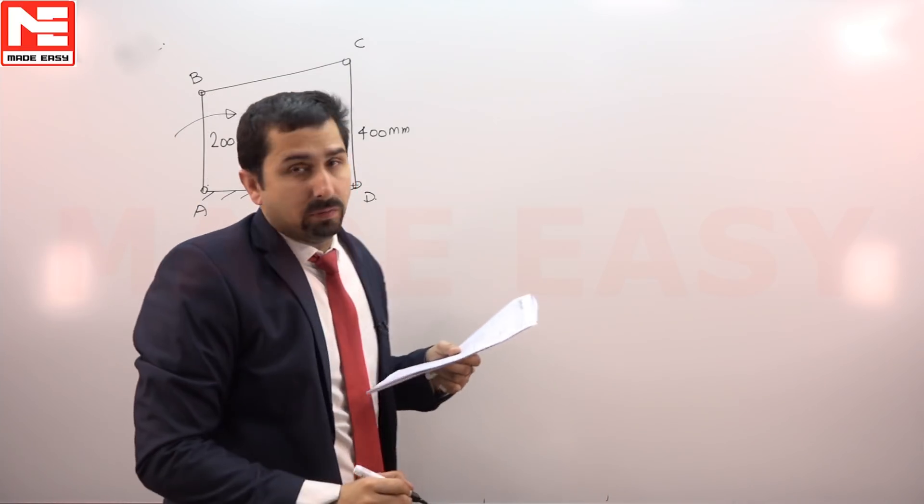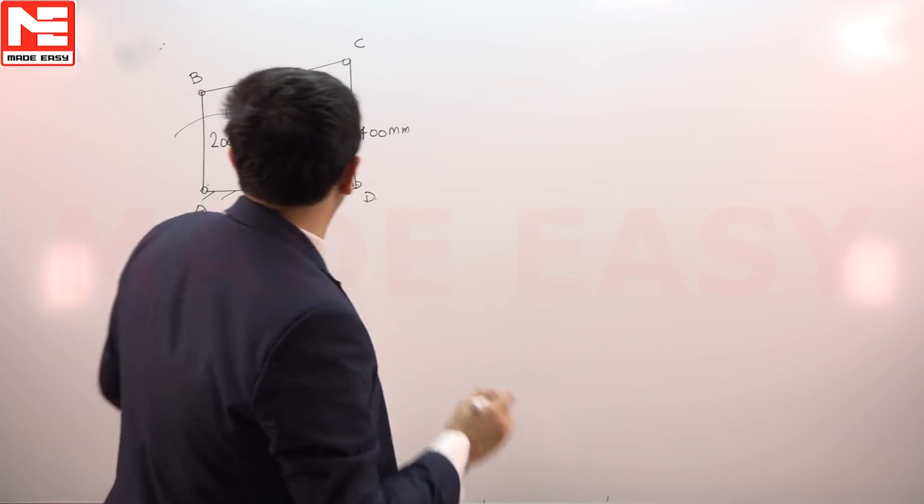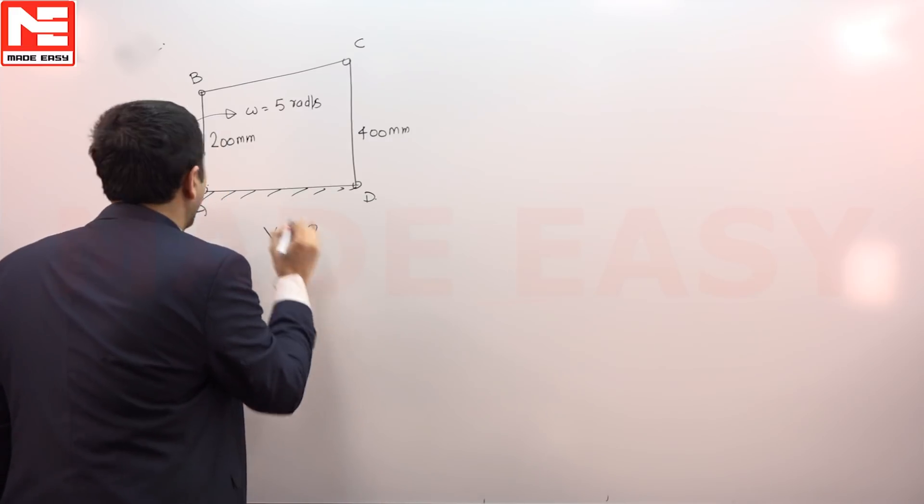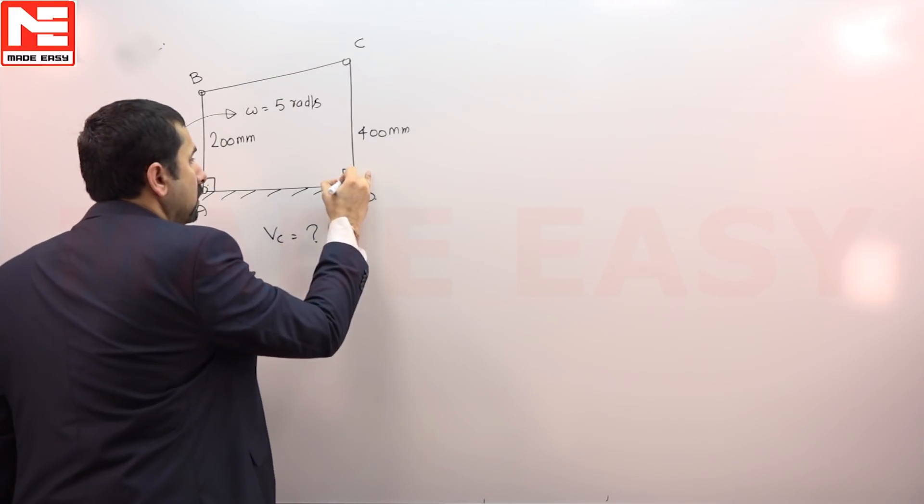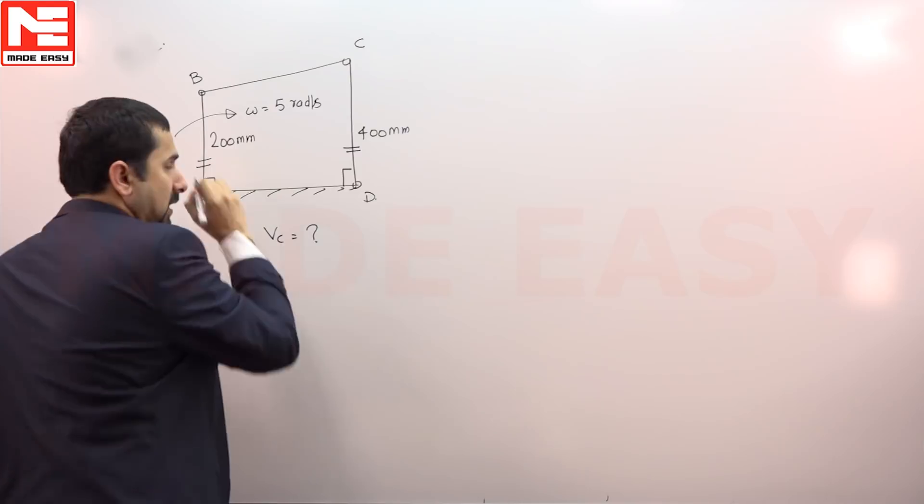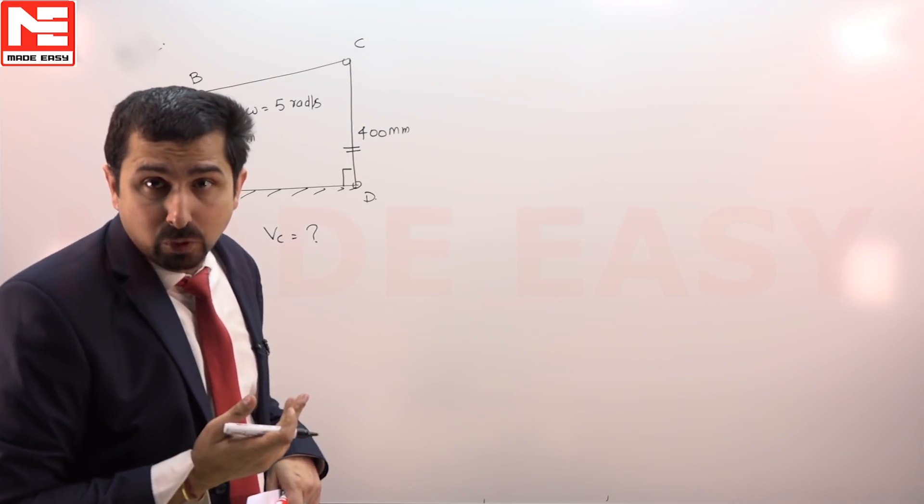The velocity of point C as shown in figure will be in meter per second. At this moment they have asked the velocity of point C, and at this moment both of these angles are 90 degrees, therefore both of these links are parallel.